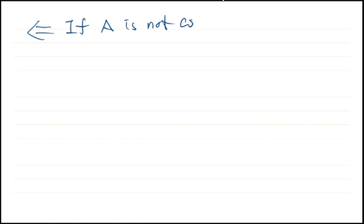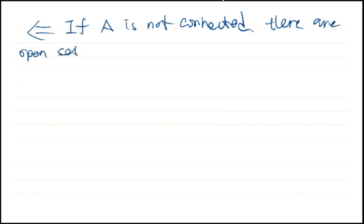We assume that A has the intermediate value property, and we want to show that A is connected. We argue by contradiction: if A is not connected, then by definition there are open sets U and V that separate the set A.